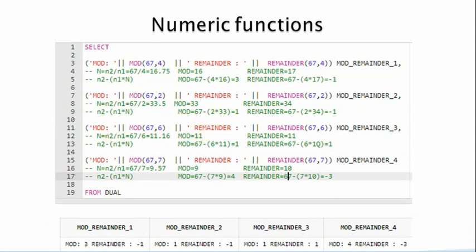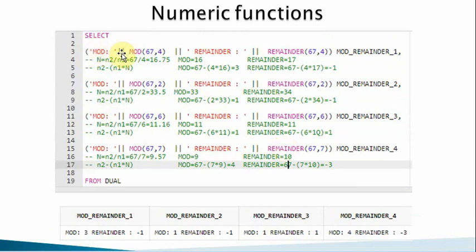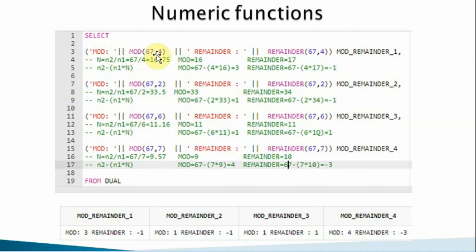Let's look at a few examples. I've concatenated labels like 'mod' and 'reminder' with the results so differences are visible in a single output line. For the first example, I find MOD and REMAINDER of the given numbers. To calculate, we first find n = n2 / n1. In our case, 67 divided by 4 equals 16.75, so n is 16.75.